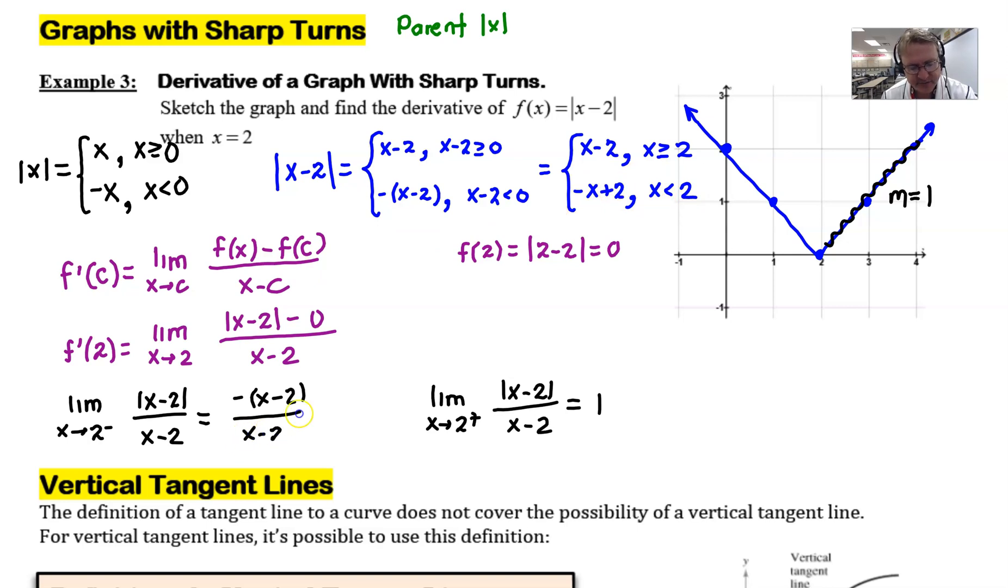And if I try to cancel those, I can certainly do it but I'm going to be left with a negative. And it turns out that is the slope over here on this side. We have a slope that's now negative 1.